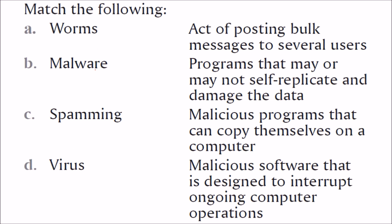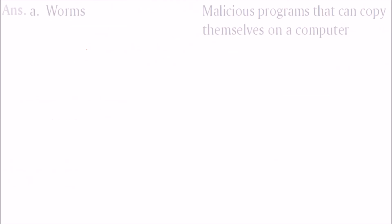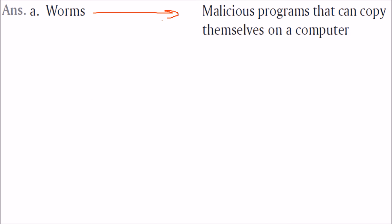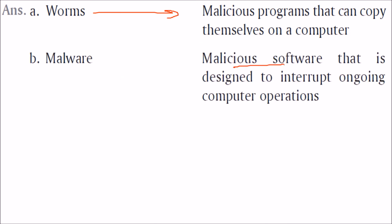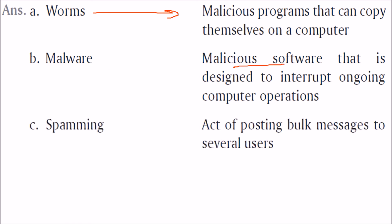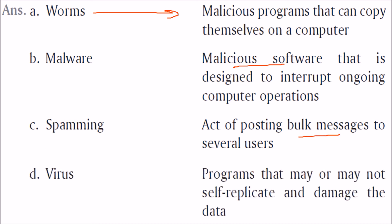Match the following — Worms, Malware, Spamming, Virus. Worms are malicious programs that can copy themselves on a computer. Malware is malicious software designed to interrupt ongoing computer operations. Spamming is the act of posting bulk messages to several users. Virus refers to programs that may or may not self-replicate and damage your system or data.